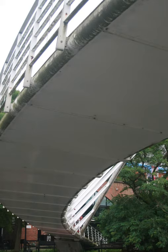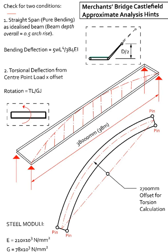The deck is approximately 2m wide. So we are going to look at the sheet which is to assist and we are going to check for two conditions: one which is a straight span in pure bending assuming a 38m straight span 2m wide.